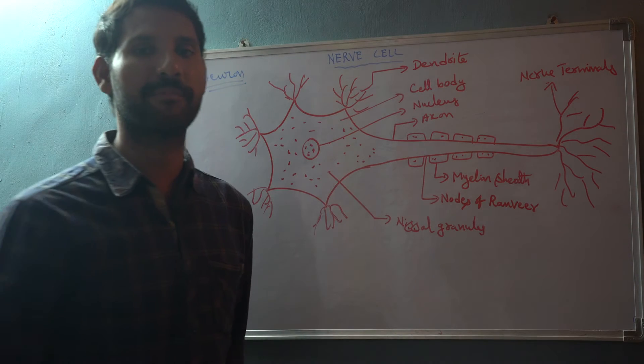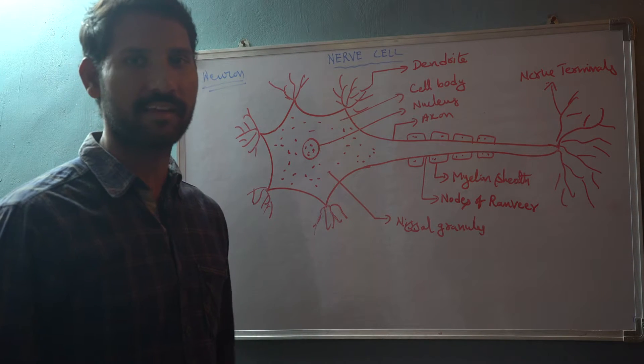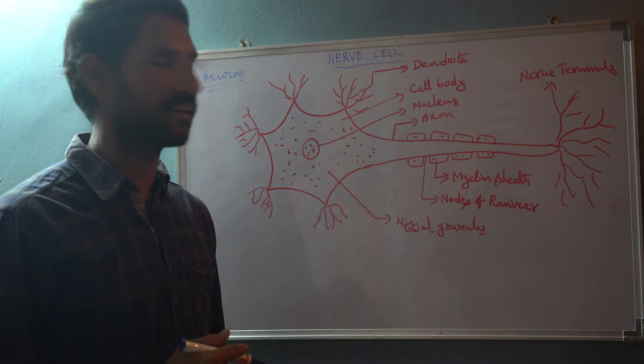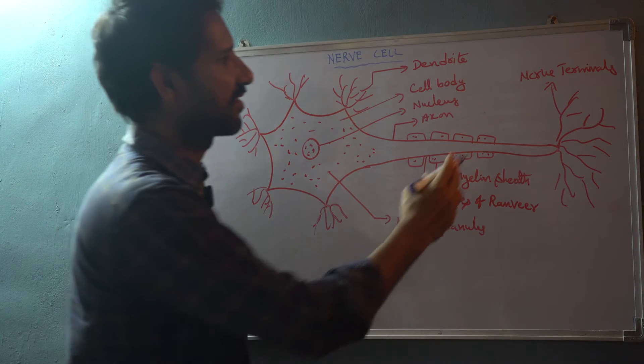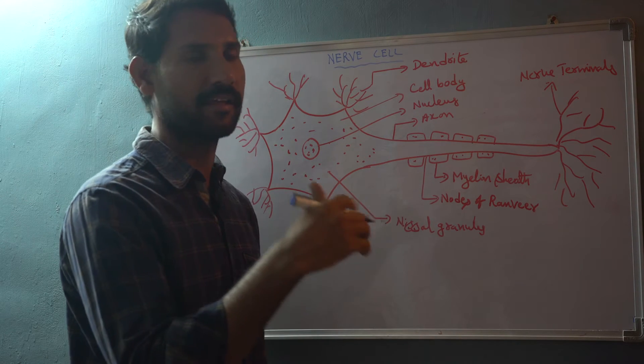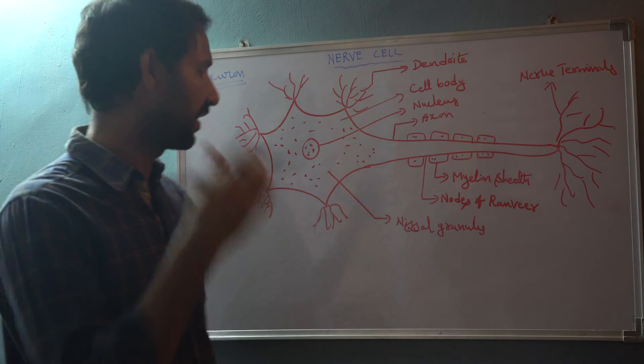The myelin sheath helps in transmission of information very fast, whereas nerve terminals help in connecting with another nerve cell.